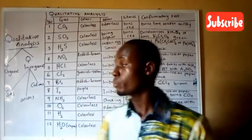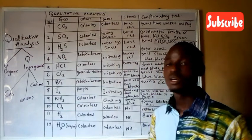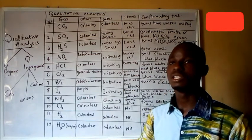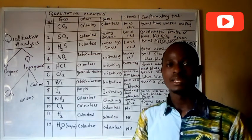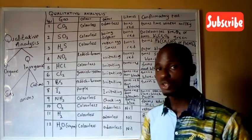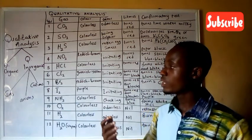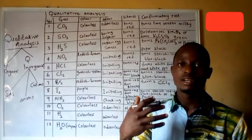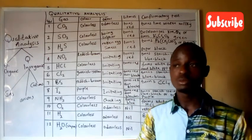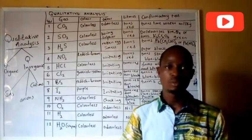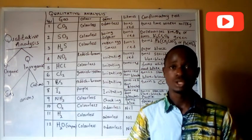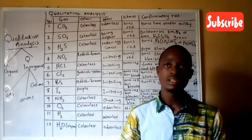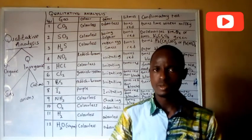Cations are positive ions and anions are negative ions. Understanding identification of gases is important because it gives an idea of the type of anion present in the solution you are working with. There are three approaches to identification of gases.